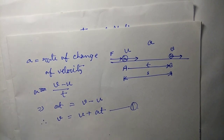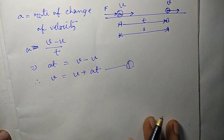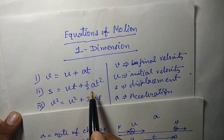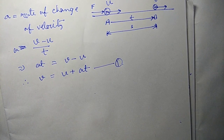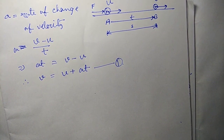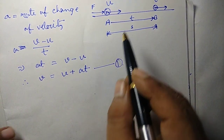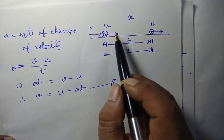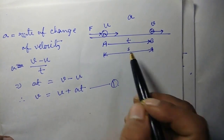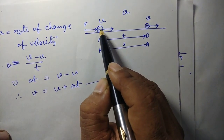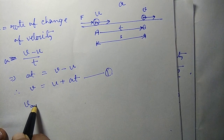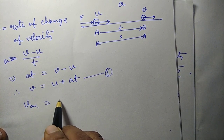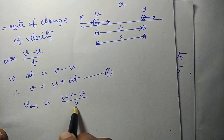The first equation came from the definition of acceleration. Let's move on to the second equation, which is s equals to ut plus half at square, where s is the displacement. For constant velocity, the displacement is simply velocity into time. So if we find the average velocity, we can multiply that average velocity with time to get s. Here we have two velocities: initially u and finally v. So average velocity v_avg equals (u plus v) divided by 2.